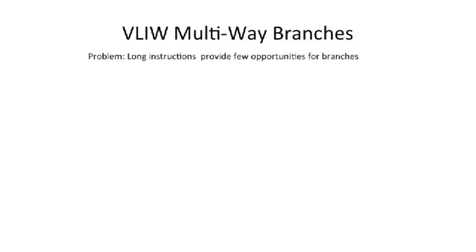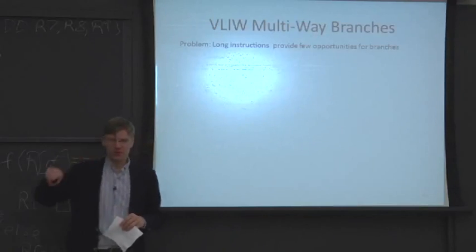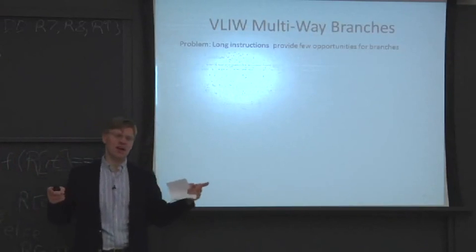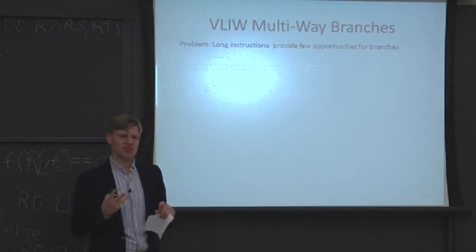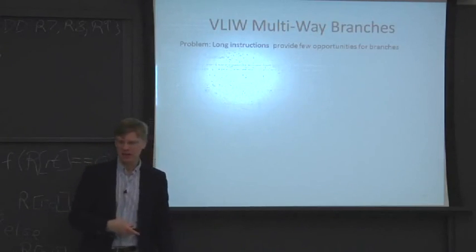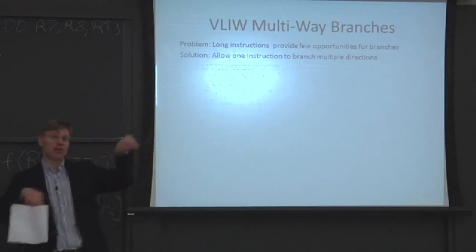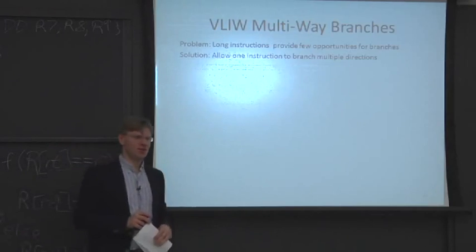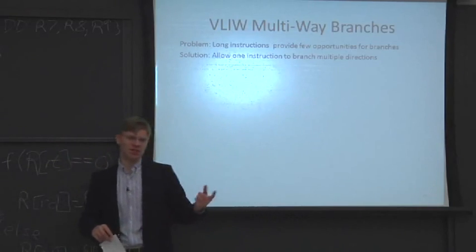A couple more additions to classical VLIWs to improve performance. First: multi-way branches. The problem is that in a VLIW architecture with, say, ten operations per bundle but short branches every three instructions, you end up with lots of wasted slots. If you can't have one instruction branch multiple directions, you waste space — and branching multiple directions is actually possible by changing the instruction set.